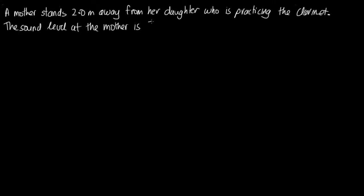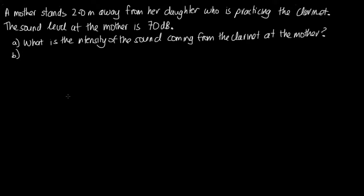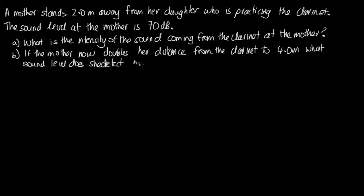Now we've seen this equation, let's have a look at how we can solve a problem using it. The question: A mother stands 2.0 meters away from her daughter who is practicing the clarinet. The sound level at the mother is 70 decibels. (a) What is the intensity of the sound coming from the clarinet at the mother? (b) If the mother now doubles her distance from the clarinet to 4 meters, what sound level does she detect now? State any assumptions that you make.